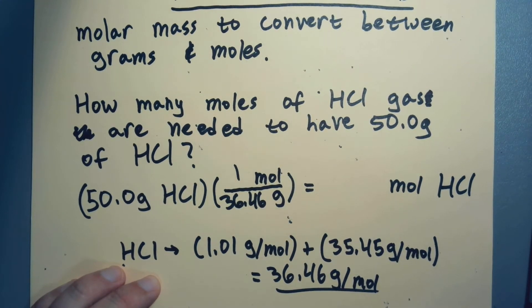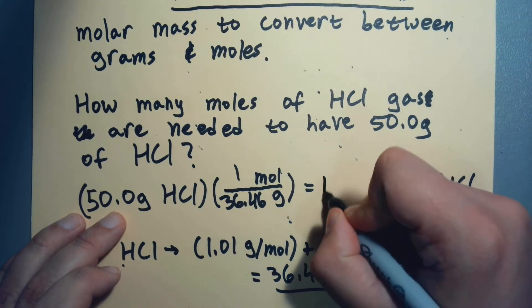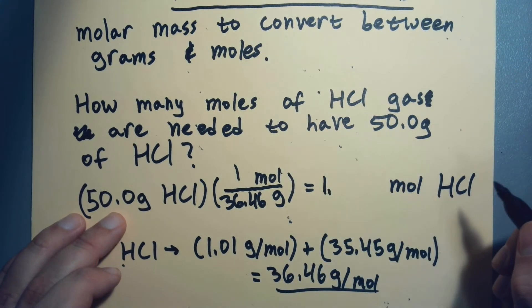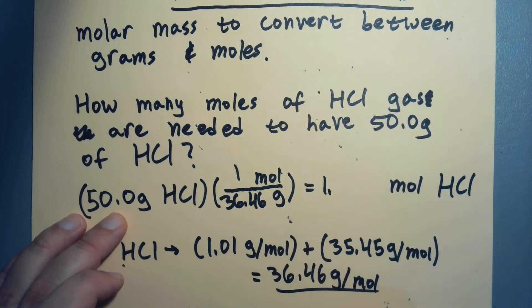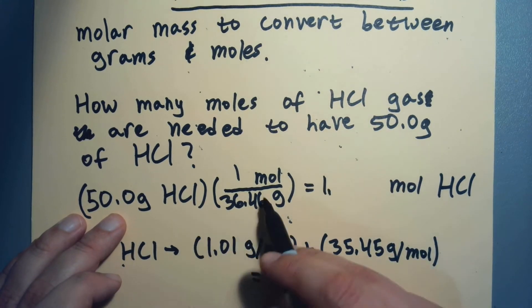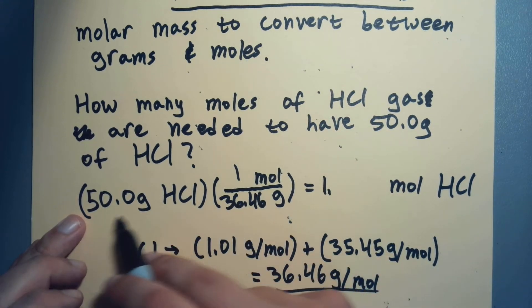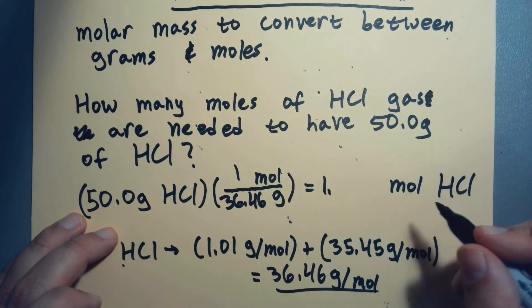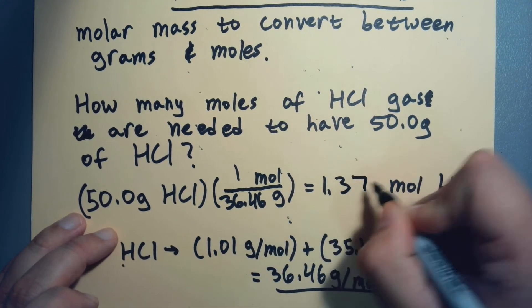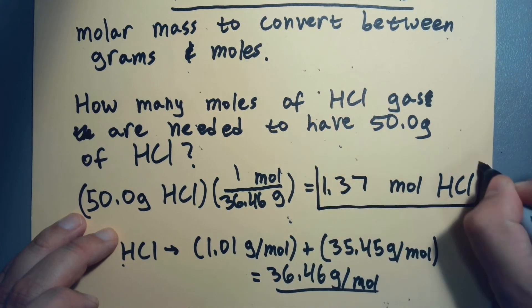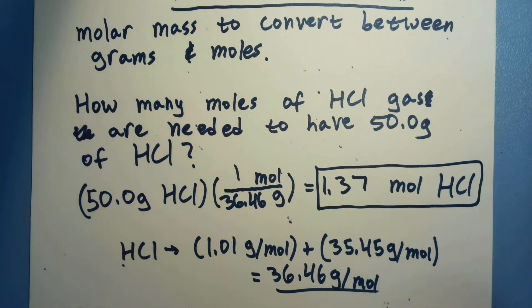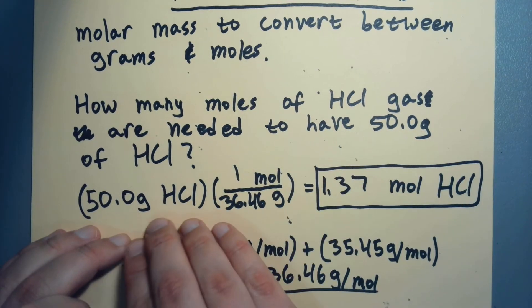So we go 50 divided by 36.46, we get 1.37. Sig fig time - how many sig figs do we get? Well, this is a measured value, but this is limiting us to three, so it's going to be three. So 1.37 moles of HCl. This is the whole problem solved.